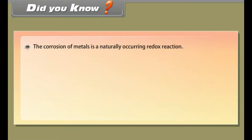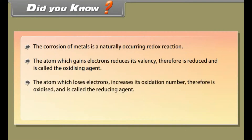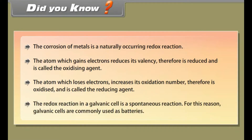Did you know? The corrosion of metals is a naturally occurring redox reaction. The atom which gains electrons reduces its valency and is called the oxidizing agent. The atom which loses electrons increases its oxidation number and is called the reducing agent. The redox reaction in a galvanic cell is a spontaneous reaction; for this reason, galvanic cells are commonly used as batteries.